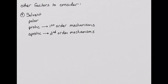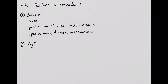The final factor to consider is the presence of silver ion. As we saw in lab, silver ion can help to ionize compounds and can sometimes force ionizations where they would not normally occur. Therefore, the presence of silver ion can help to force first-order mechanisms.